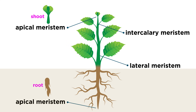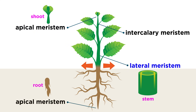This means meristematic cells allow the roots of a plant to grow deeper into the soil, and the branches of a plant to grow taller into the air. More specifically, they can be present in the apical, or farthest position at the tips of roots and shoots, the lateral or side position within the vascular or transportation tissues of the plant, or in the intercalary position where branches intersect and where leaves attach to branches.